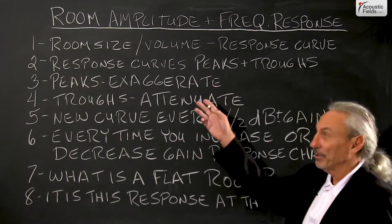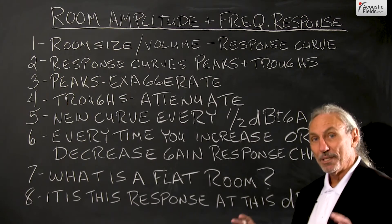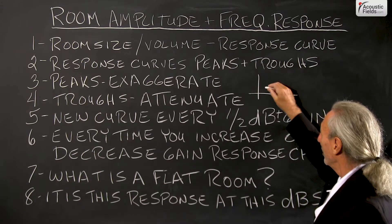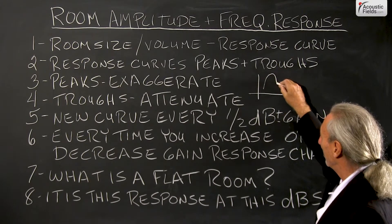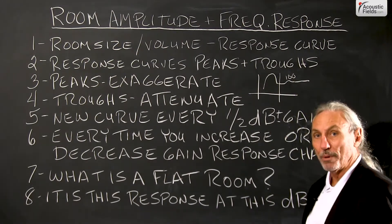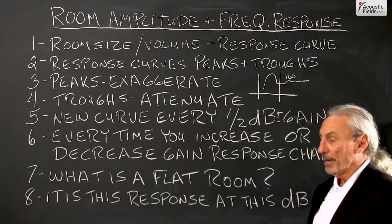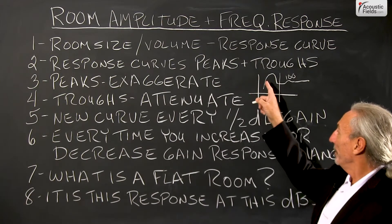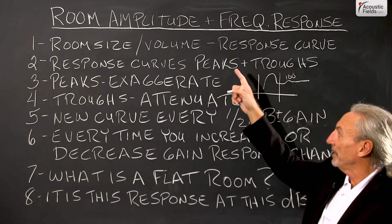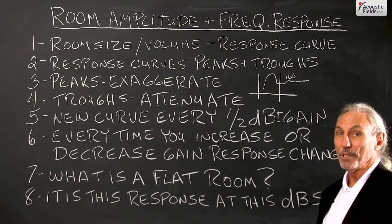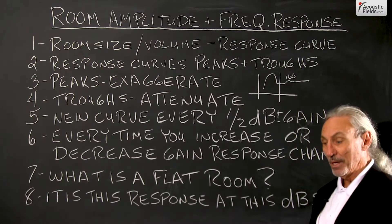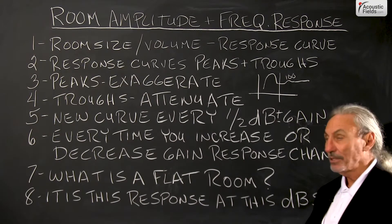We know from past videos that room size and volume dictates the response curve, and we know that in small rooms we always have that big bump below 100 cycles, so that's always a problem in small rooms. These bumps and peaks are directly related to the size of the room, the volume, and also the usage — because what we do and how much energy we put in the room determines how the room reacts to that energy.